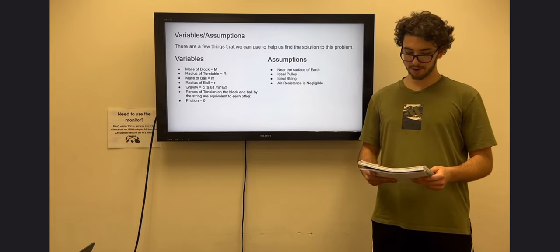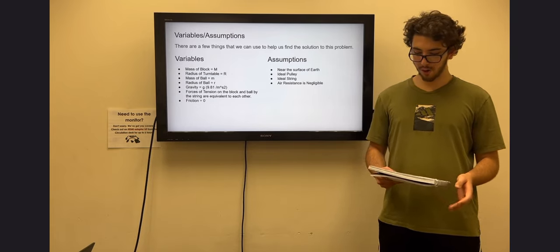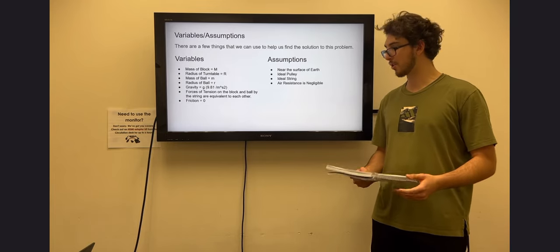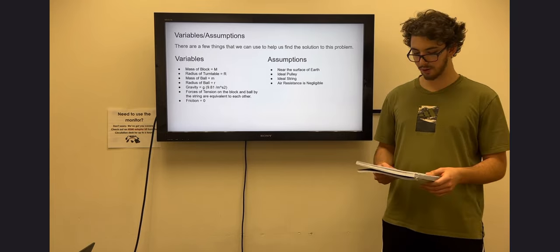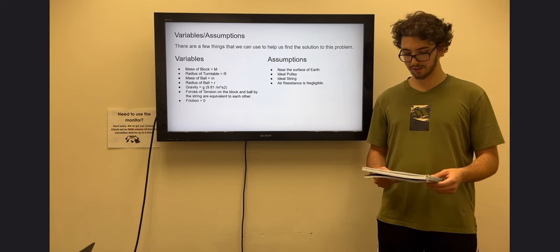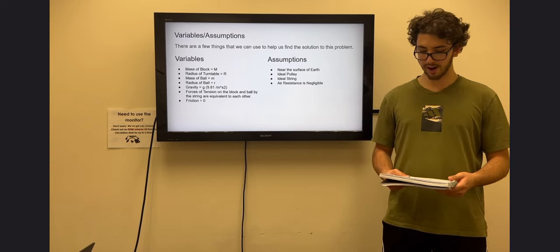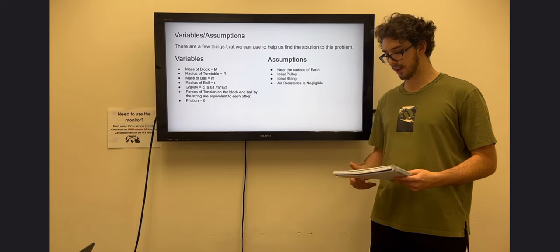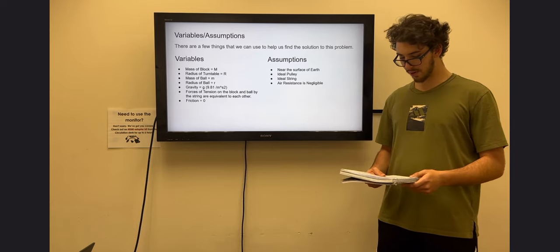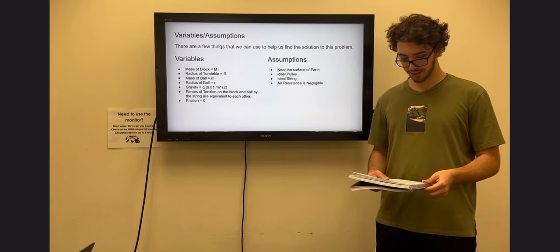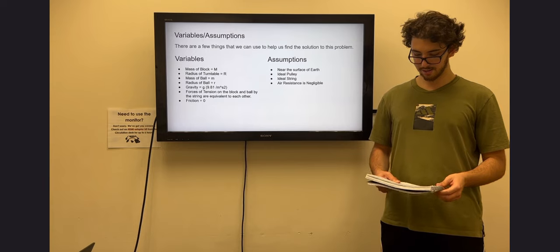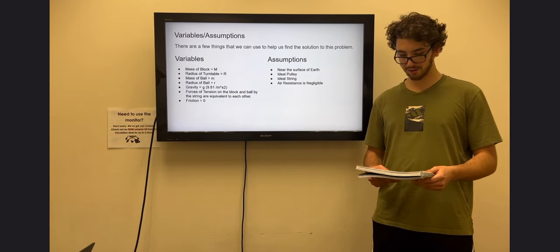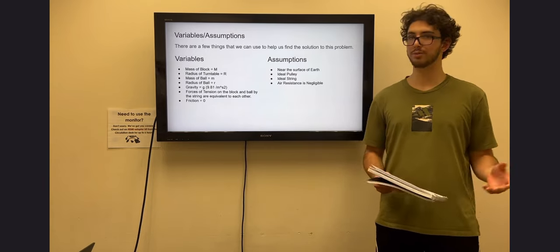We can start with the variables that we know: the mass of the block, capital M, and the ball, lowercase m, as well as the radius of the turntable, capital R, and the ball, lowercase r. We also know that the pulley and turntable are frictionless, meaning that the forces acting on the system are gravity and the tension in the string, both of which remain constant.